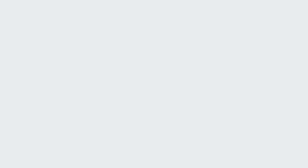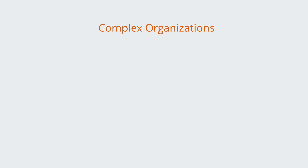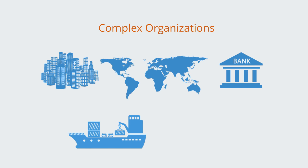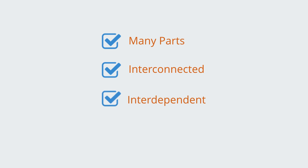Examples of these complex organizations might be cities, international politics, multinational corporations, global logistics networks or healthcare systems. These are all complex organizations due to their nature of having many parts that are highly interconnected, interdependent and autonomous.